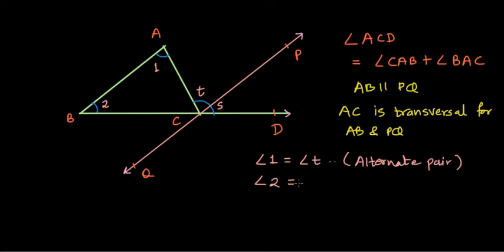Similarly, angle two is equal to angle S and the reason behind it is that these are corresponding angles considering AB and PQ as parallel lines and BC as the transversal, with BC intersecting AB and PQ. It's a corresponding pair of angles.